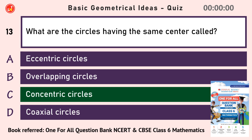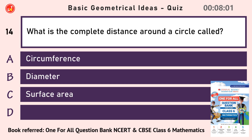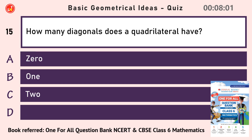What is the complete distance around a circle called? Circumference. How many diagonals does a quadrilateral have?